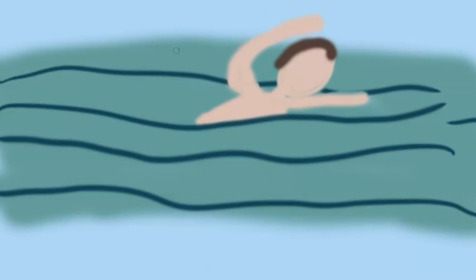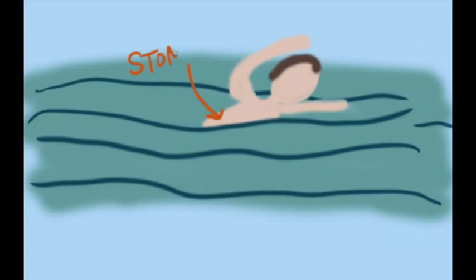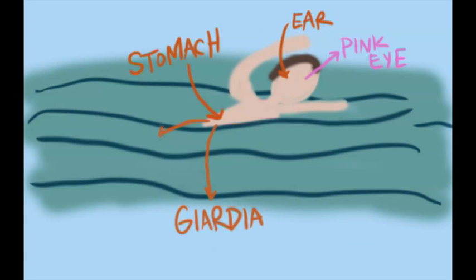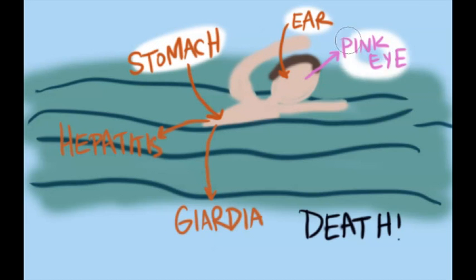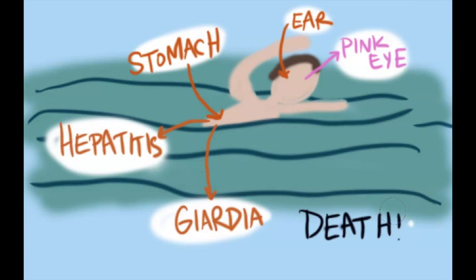The types of things you might see if you swim in animal or human waste could be things from the stomach virus, stomach infection, ear infection, pink eye, you could get things like giardia, you could get more severe illnesses like hepatitis. In the most extreme cases, it can even cause death.